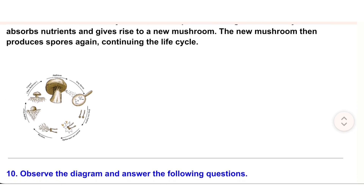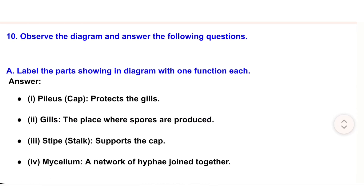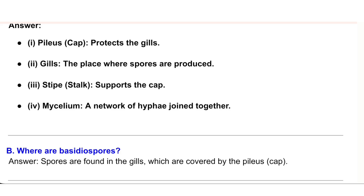10. Observe the diagram and answer the following questions. (a) Label the parts shown in the diagram with one function each. Answer: (i) Pileus (cap) — protects the gills. (ii) Gills — the place where spores are produced. (iii) Stipe (stalk) — supports the cap. (iv) Mycelium — a network of hyphae joined together.